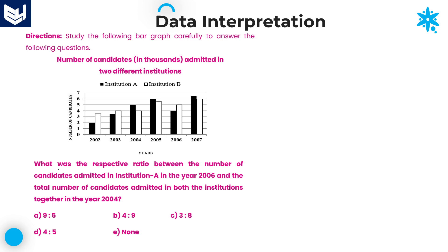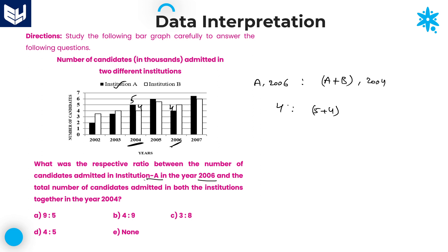Let us look at the third question: what was the respective ratio between the number of candidates admitted in Institute A in the year 2006 and the number of candidates admitted in both institutes together in the year 2004? First, what is Institute A's value in 2006? Institute A is the dark-colored bar, and for 2006 that value is 4.